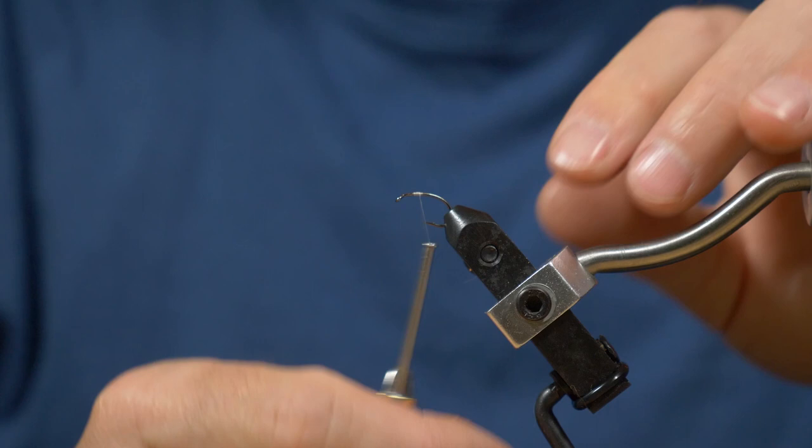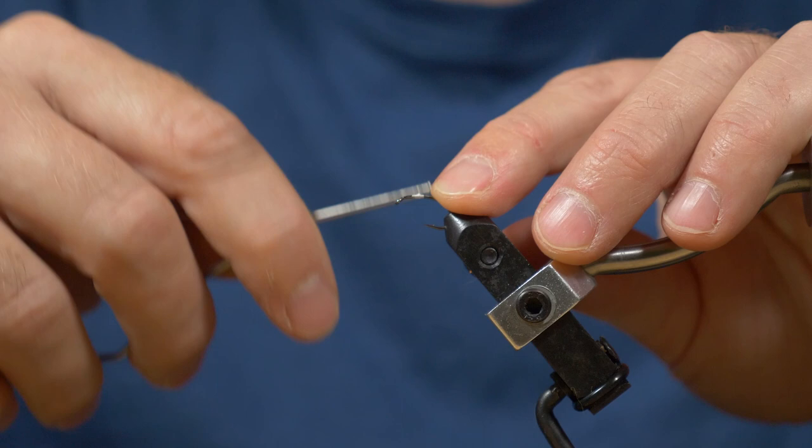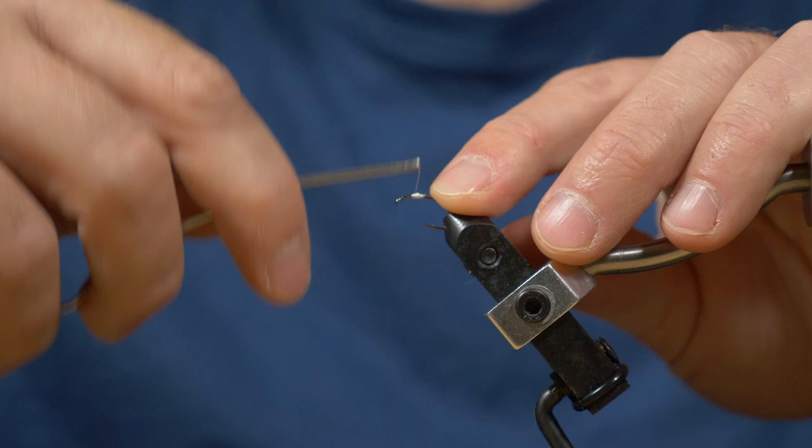So you're actually going to build up a little bit of a bulb. Go figure of eight and build it up a bit so it becomes a little bit of a ball, and that just really helps everything stay where it should.